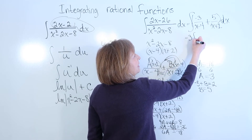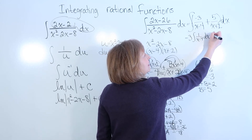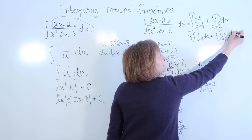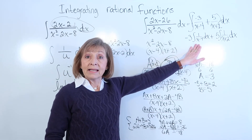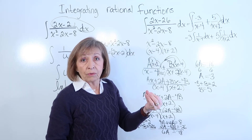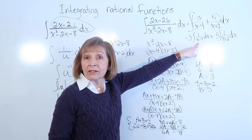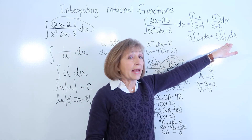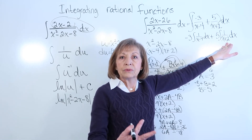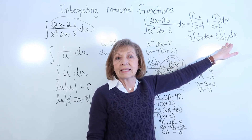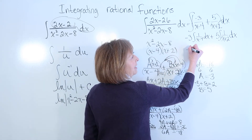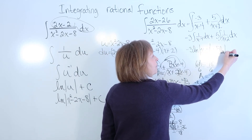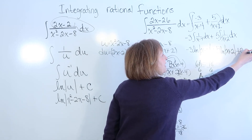For each integral, the derivative of the denominator is 1, so du equals dx. The integrals evaluate to natural logs: negative 3 times the natural log of the absolute value of (x minus 4), plus 5 times the natural log of the absolute value of (x plus 2), plus C.